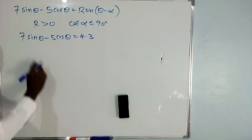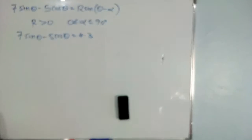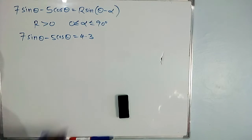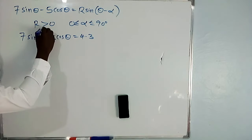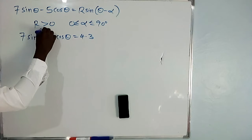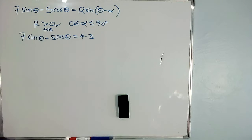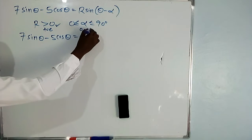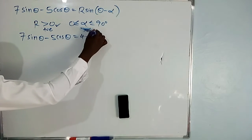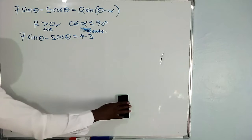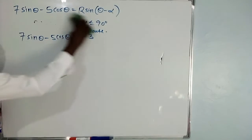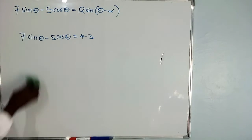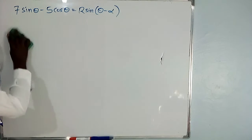We've been given 7 sin theta minus 5 cos theta and told to express it in the form R sin(theta minus alpha), where R is greater than 0 — meaning take the positive value of R. And alpha is between 0 and 90 degrees, meaning take the value of alpha which is an acute angle. When calculating, you will get many values of alpha, but they only need the acute angle value.